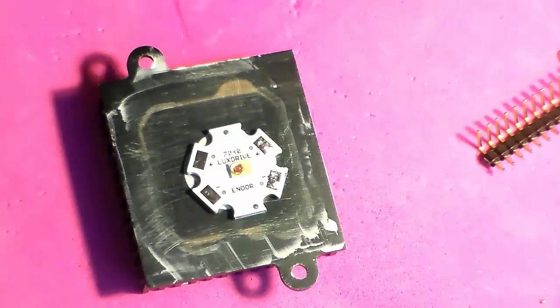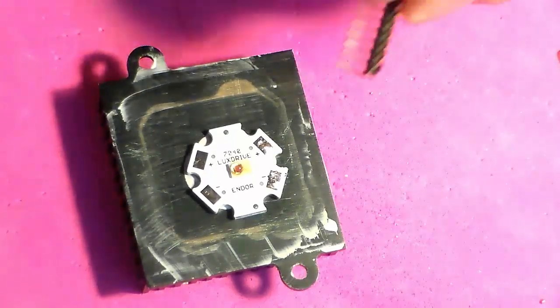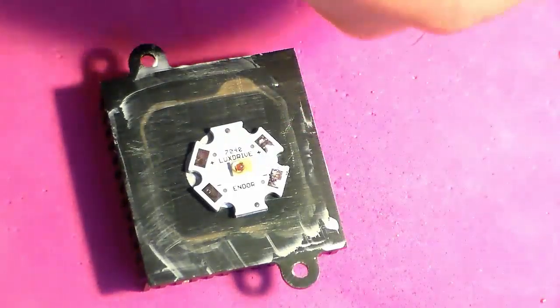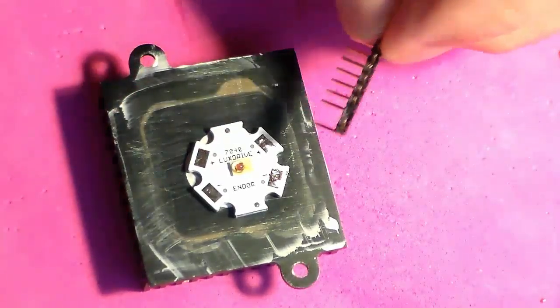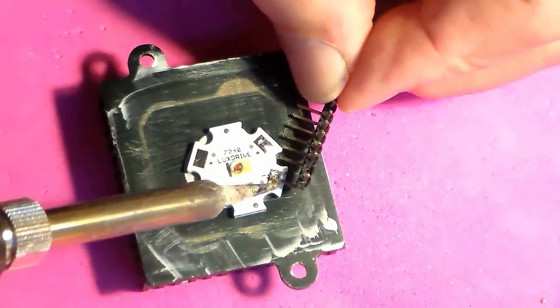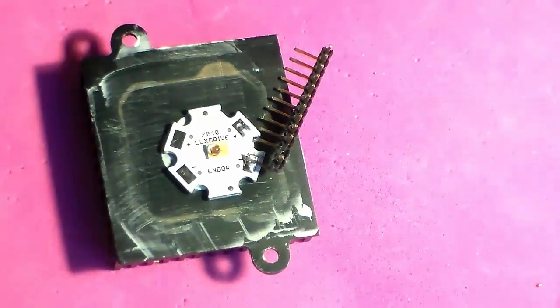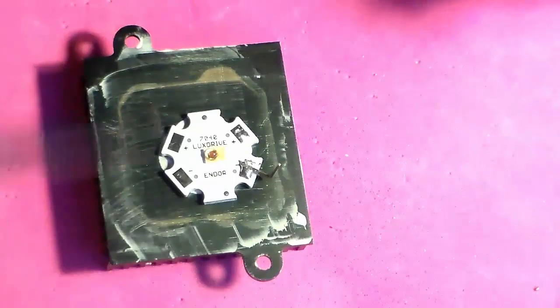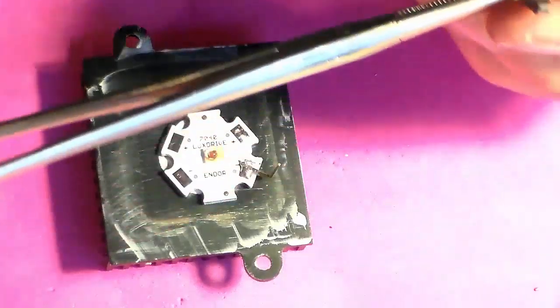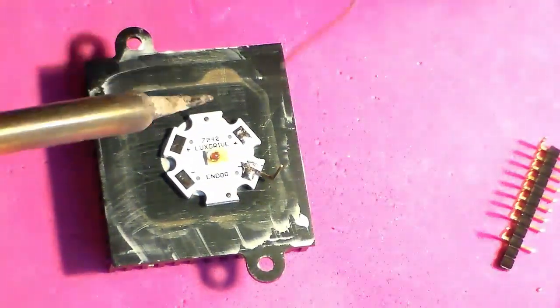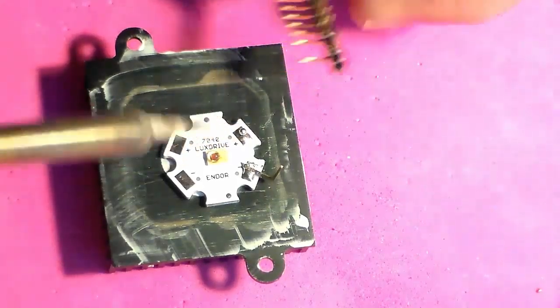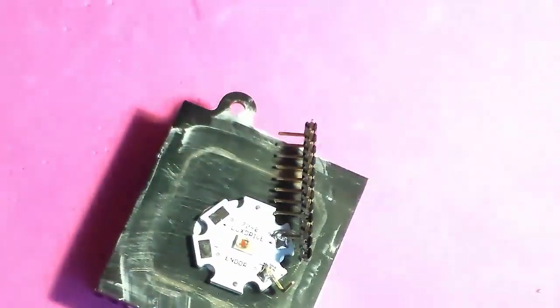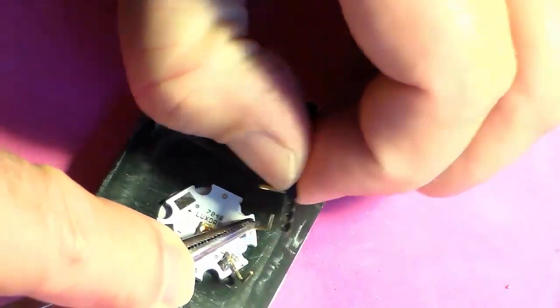I've just put a little solder on two of the pads here of the Luxeon star. My plan is to put a pin on here. I've got these 90 degree pins that I can work with. I'm going to pull one of the neighbor pins out so it's not so close and we'll just solder this guy right to this pad. Hold this down and pull the strip off, leave just the pin sitting there. I'll do the same to the other pad.